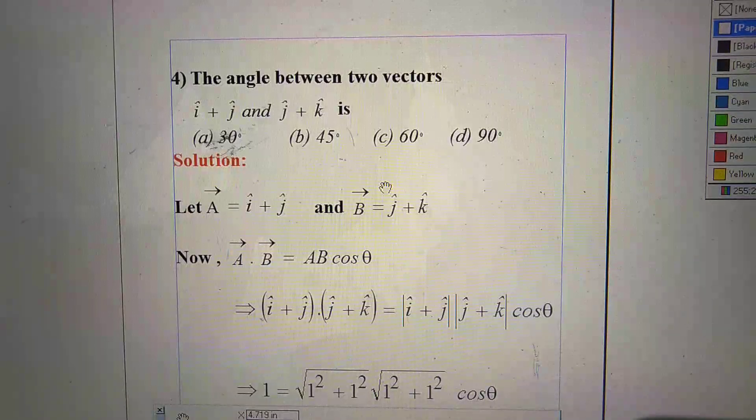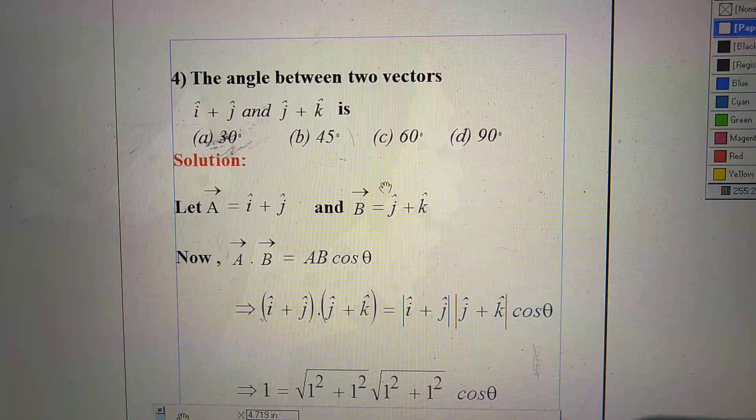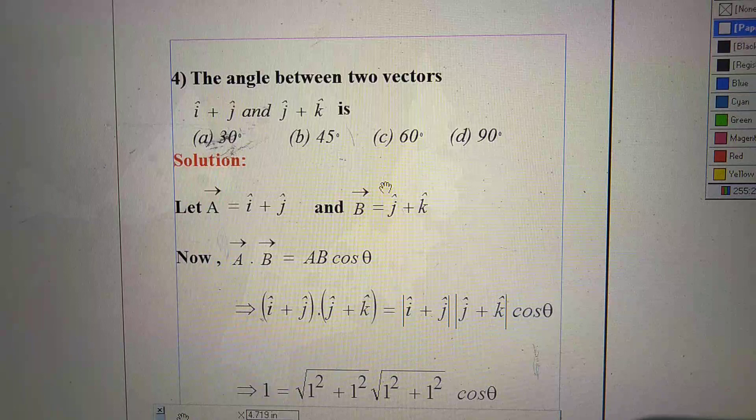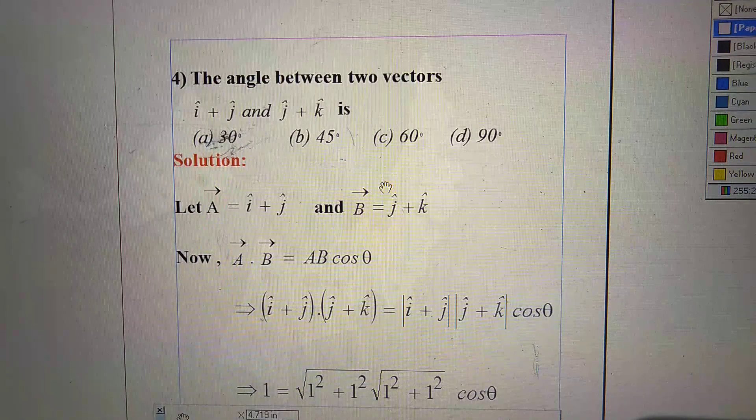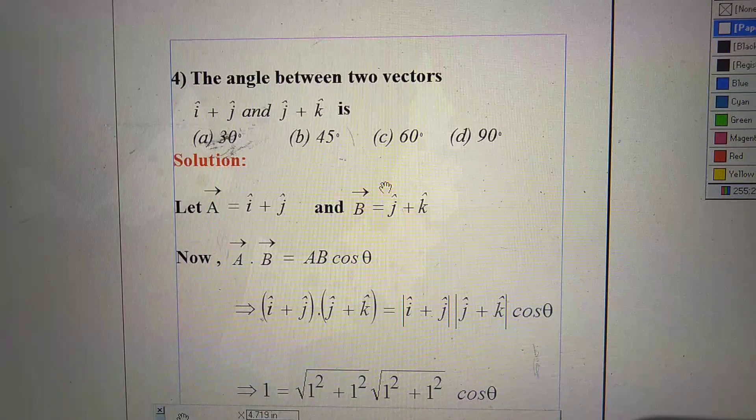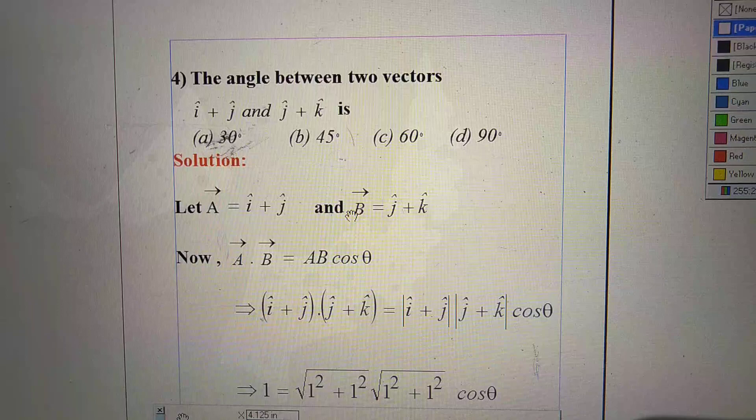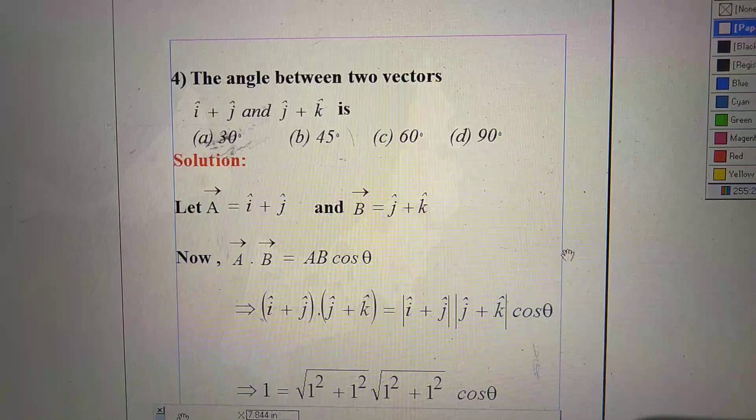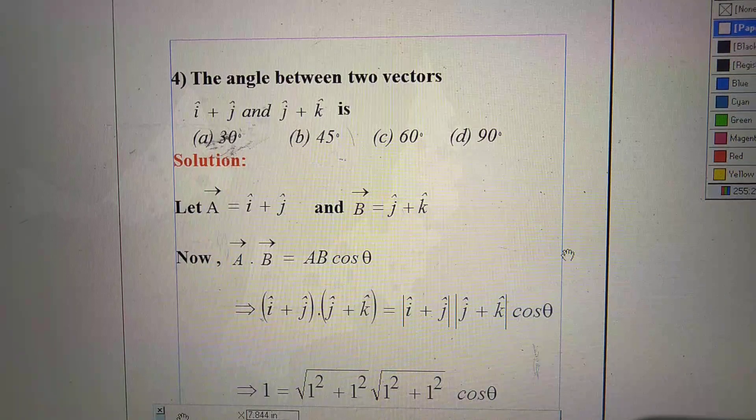Question number 4. The angle between two vectors i cap plus j cap and j cap plus k cap is: option A, 30 degree; option B, 45 degree; option C, 60 degree; option D, 90 degree. So how can you solve this one? Here we consider vector A equal to i cap plus j cap, vector B equal to j cap plus k cap.